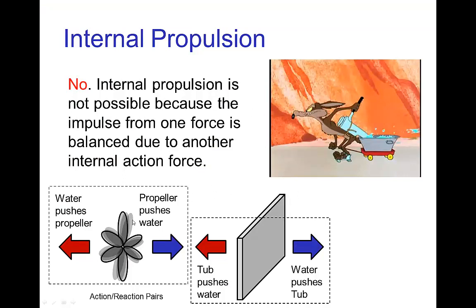This internal propulsion doesn't work because, while the propeller pushes the water — which would result in a reaction that moves the outboard motor and propeller — the water stays inside the tub. So there's a force due to the water pushing on the back of the tub. The water stays in the tub, so the two forces on the water have to be in balance, which means the two forces on the tub and the propeller also have to be in balance. This will not work for propulsion.